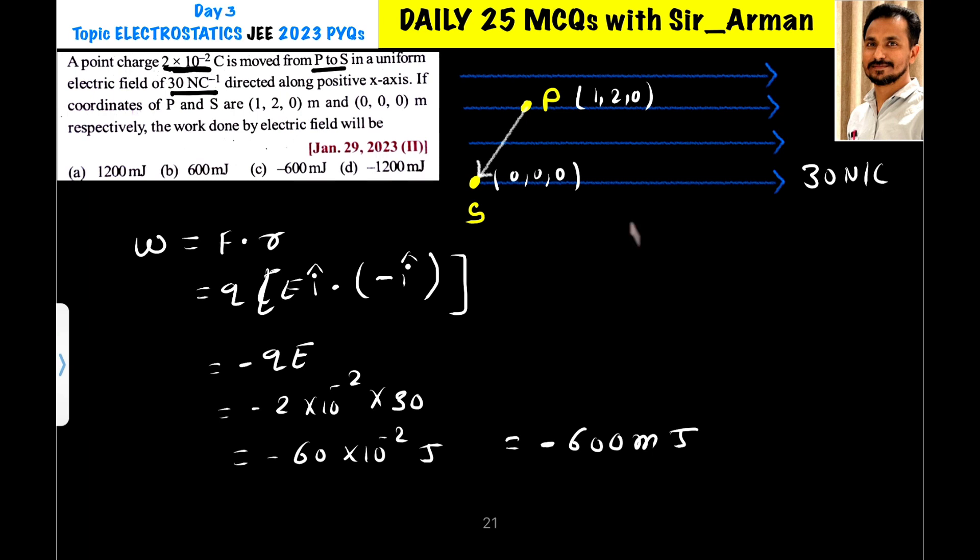Now we know that the work done by electric field is given by two equations. One equation is V equals W by Q, so W equals V into Q. We can use this equation or we can use another equation: work equals force into displacement, or work equals F dot D. It is a dot product of force and displacement.